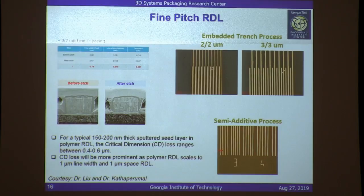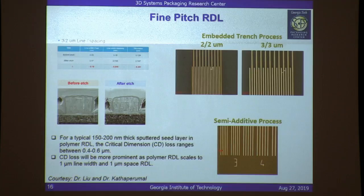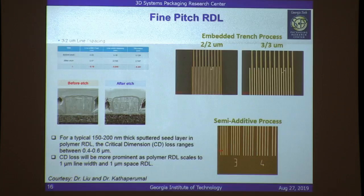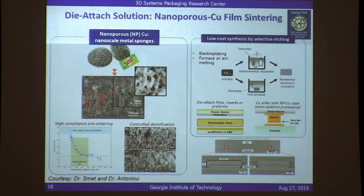PRC has been working on this for quite some time. We have been developing several processes working with different kinds of materials — low stress, low decay, low DF materials. We are able to do lines and spaces of the order of 2 microns line width and 2 micron line spaces — very similar to what silicon interposer technology achieves. We are also able to build micro-vias with dimensions down to around 4.5 to 5 microns, and we're developing new assembly techniques based on nanoporous copper film sintering that gets us down to pitches of the order of 20 microns.